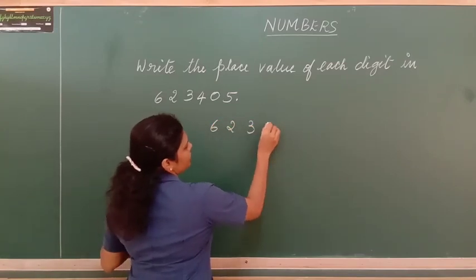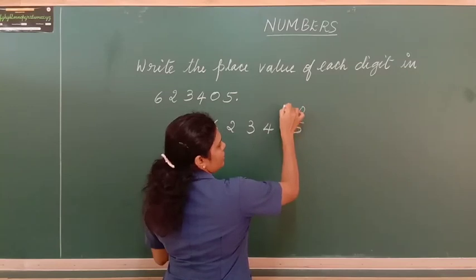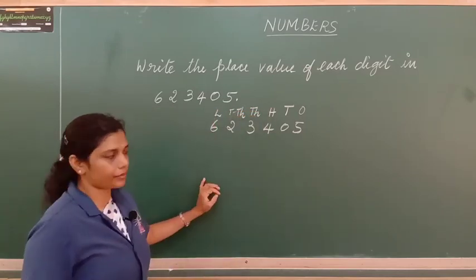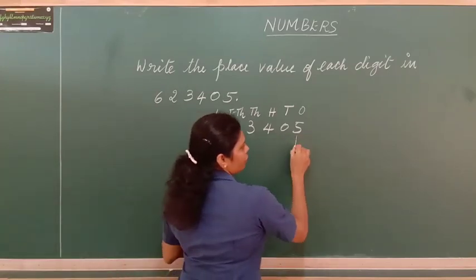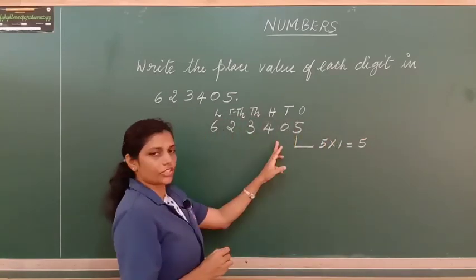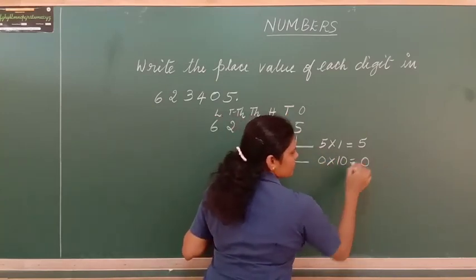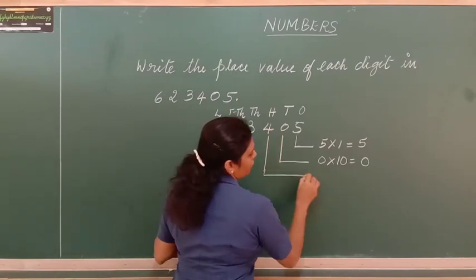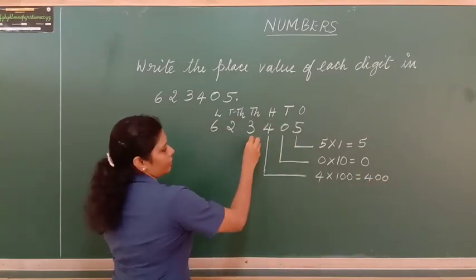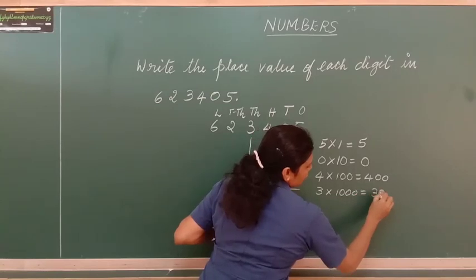I write the number as it is. Before we write the place value, let us write the places: ones, tens, hundreds, thousands, ten thousands, and lakh. We start from the last digit 5 — 5 is in ones place, so 5 × 1 = 5. Next digit is 0, so 0 × 10 = 0. Next is 4 in hundreds place, so 4 × 100 = 400. We have 3 in thousands place, so 3 × 1,000 = 3,000.